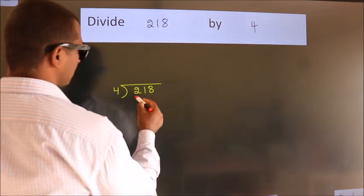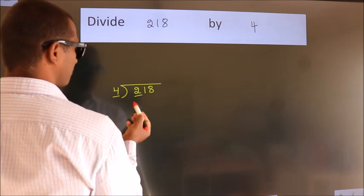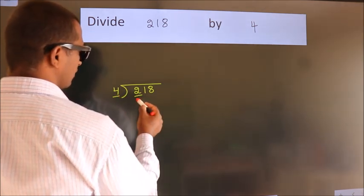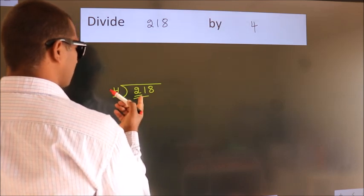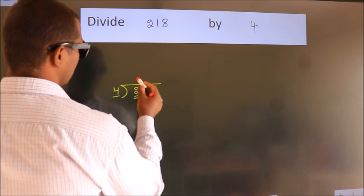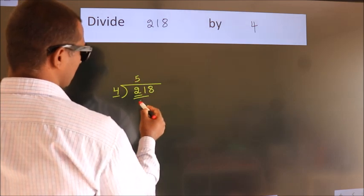here we have 2. Here 4. 2 smaller than 4, so we should take 2 numbers: 21. A number close to 21 in 4 table is 4 fives 20.